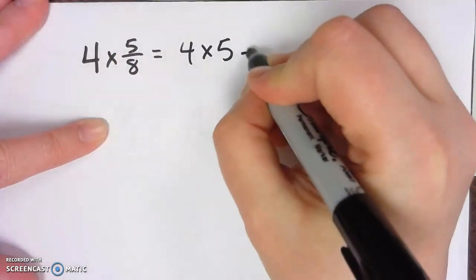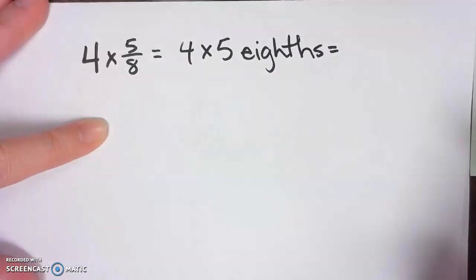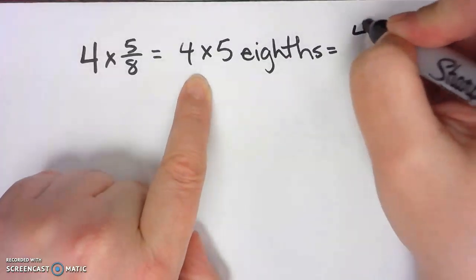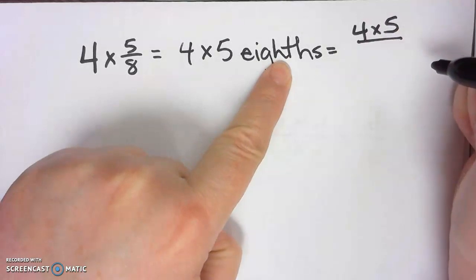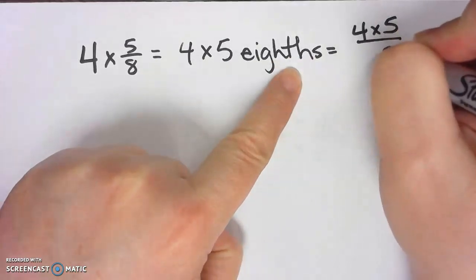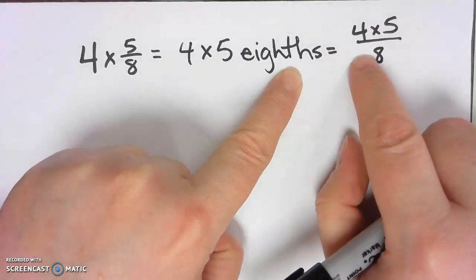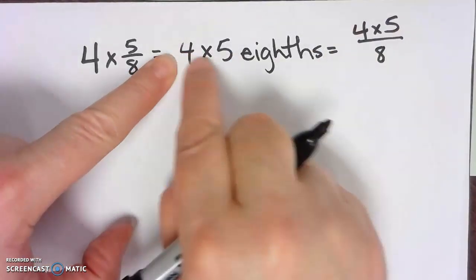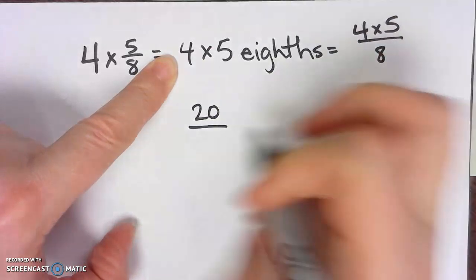So unit form, I just read it: 4 times 5 eighths. And now I'm going to rewrite it as 4 times 5, and instead of using unit forms with words, I'm going to use numeric form with numbers. So now you can say that this is 4 times 5 equals 20, and eighths.